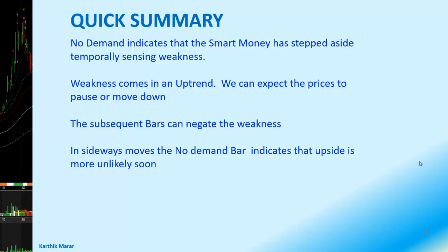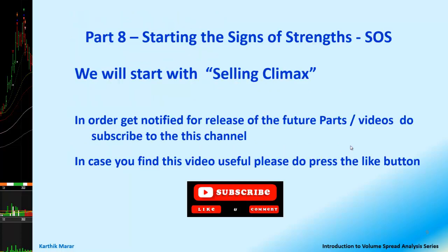With this, we come to the end of this video. Let us quickly summarize: the no-demand bar indicates that smart money has stepped aside, temporarily sensing weakness. Weakness comes in an uptrend; we can expect prices to pause or move down. The subsequent bars can negate this weakness. In sideways moves, the no-demand bar indicates that upside is unlikely soon. In the next part, we will start the signs of strength — the SOS — beginning with the selling climax. Do subscribe to this channel to get notified for future parts of this series.